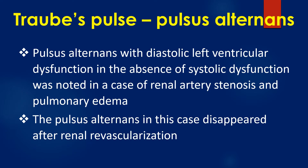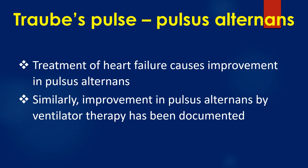Pulse alternance with diastolic left ventricular dysfunction in the absence of systolic dysfunction was noted in a case of renal artery stenosis and pulmonary edema. The pulse alternance in this case disappeared after renal revascularization. Treatment of heart failure causes improvement in pulse alternance. Similarly, improvement in pulse alternance by ventilator therapy has been documented.